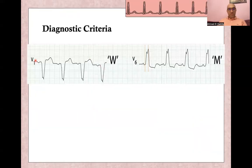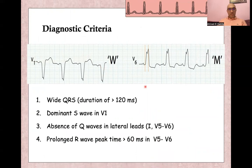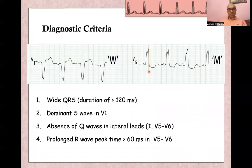The diagnostic criteria in leads V1 and V6 include: wide QRS duration greater than or equal to 120 milliseconds, a dominant S wave in lead V1, absence of Q wave in lead V6, and a prolonged R wave peak time of more than 60 milliseconds in V5 and V6. R wave peak time is measured from the beginning of the R wave to its peak, and normally this is less than one small square.